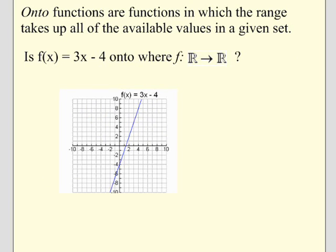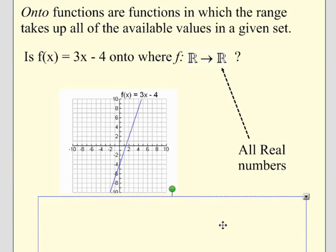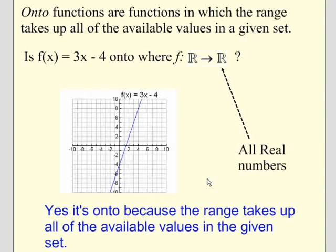Remember, onto functions are functions in which the range of the function takes up all of the available values in a given set. Is f(x) = 3x - 4 onto, where the available values for the range are all real numbers? The range of f(x) = 3x - 4 does take up all real numbers. So it is onto, because the range takes up all of the available values in the given set — in this case, all real numbers.